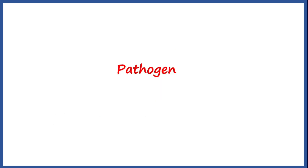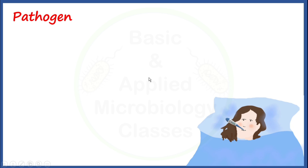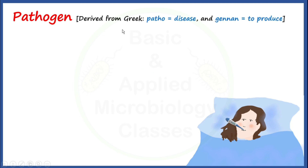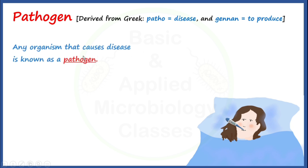Let's first understand about pathogen. If we talk about pathogen, you should know that this word has been derived from Greek, where the meaning of 'patho' is disease and 'gen' has been taken from 'genin', which means to produce. It means any organism that causes disease is known as a pathogen.